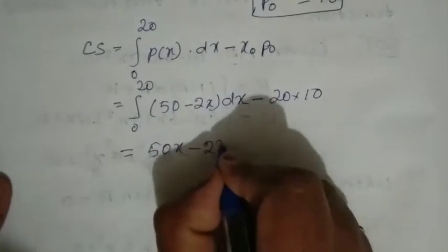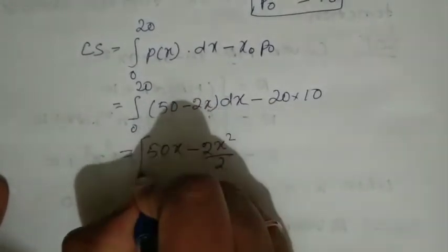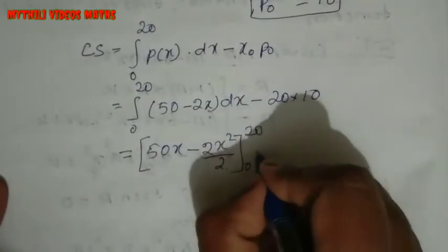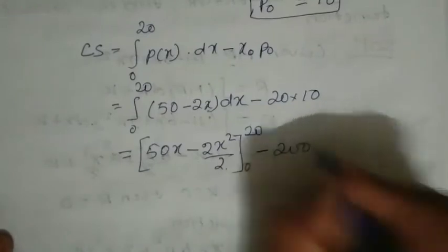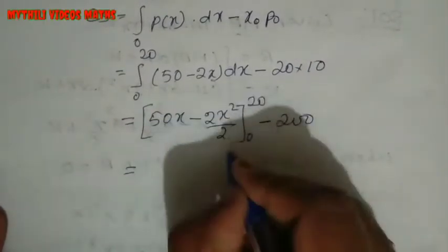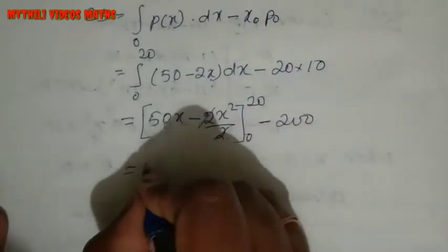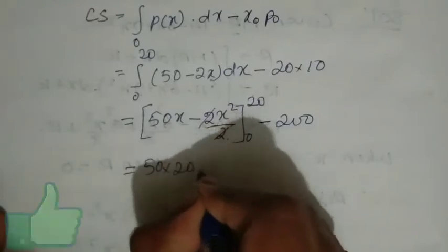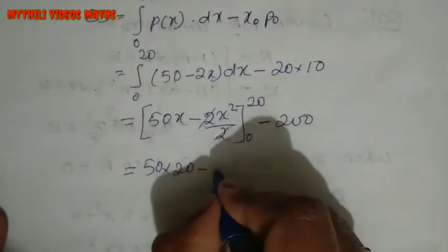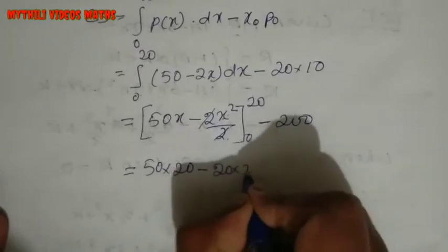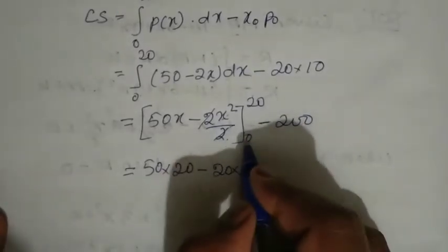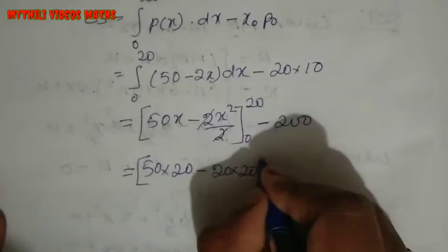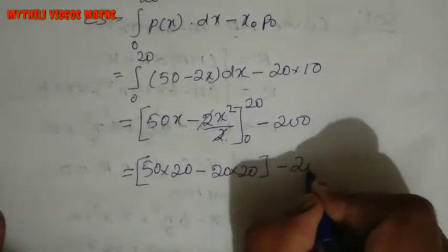This equals integral from 0 to 20 of (50 minus 2x)dx minus 200. Integrating: 50x minus x squared divided by 2, limits 0 to 20, minus 200. Apply upper limit: 50 times 20 minus 20 squared divided by 2. Lower limit is 0, so no need to apply.